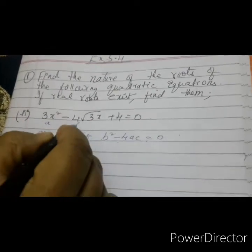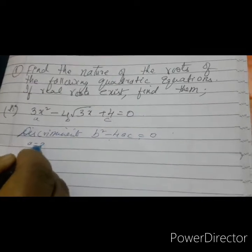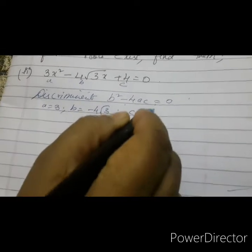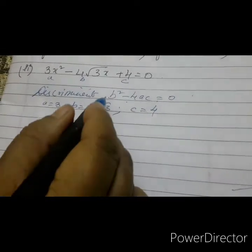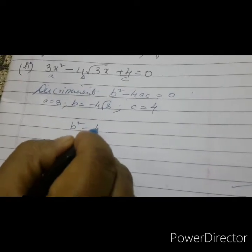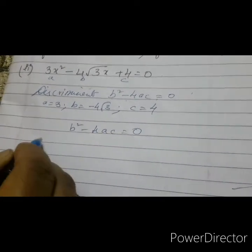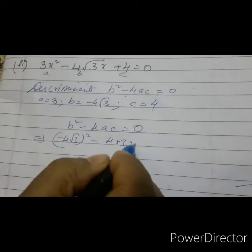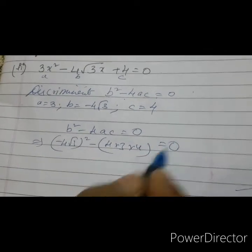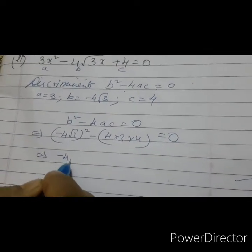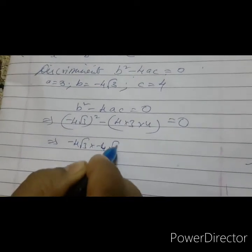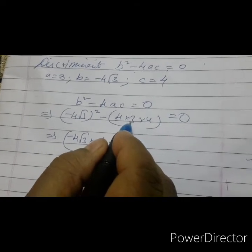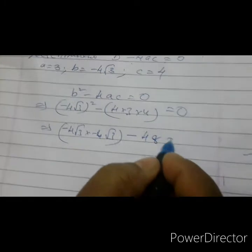From here, this is a, this is b, and this is c. I am writing: a equals to 3, b equals to minus 4 root 3, and c equals to 4. Now substitute in b squared minus 4ac equals to 0. b squared is how much? Minus 4 root 3 whole squared, minus 4 into 3 into 4 equals to 0. Minus 4 root 3 whole squared means you write it twice: minus 4 root 3 into minus 4 root 3, minus 4 into 3 is 12. 12 into 4 is 48 equals to 0.